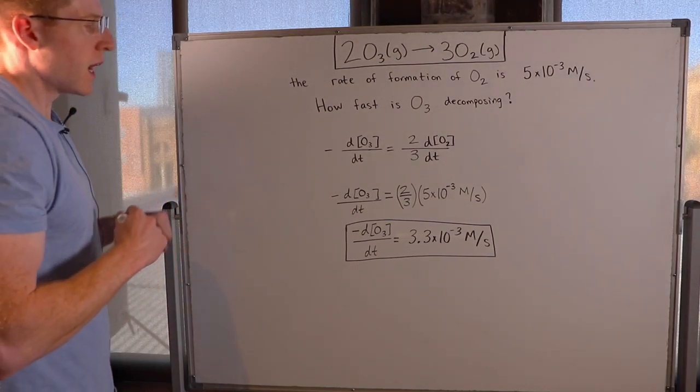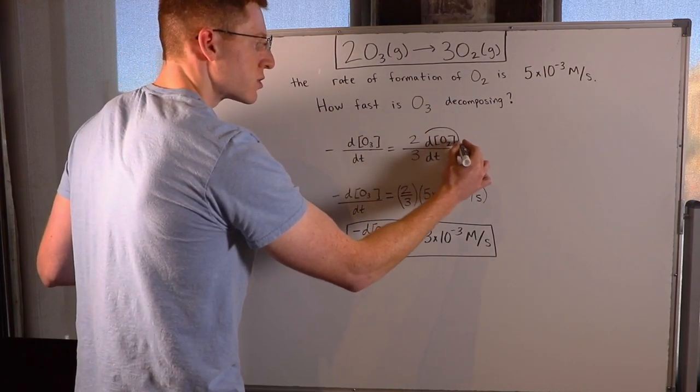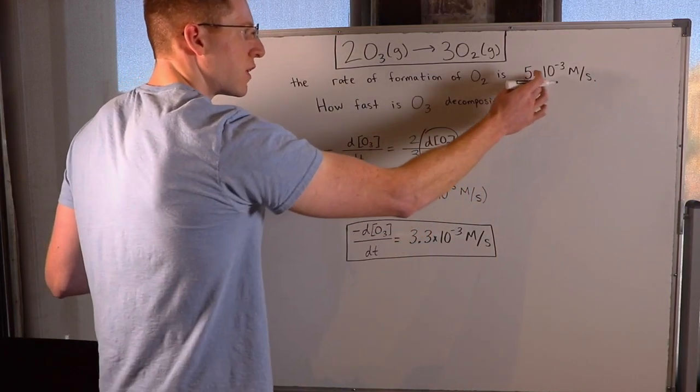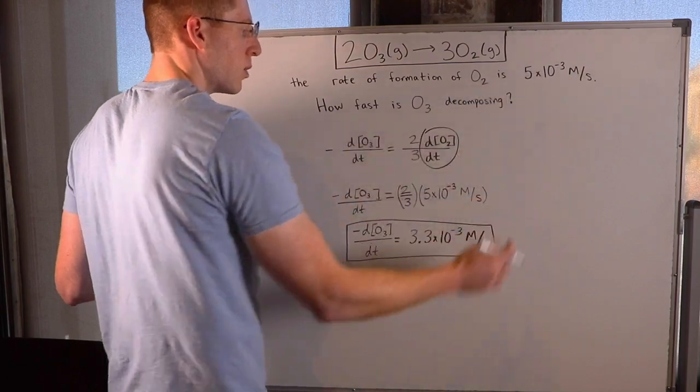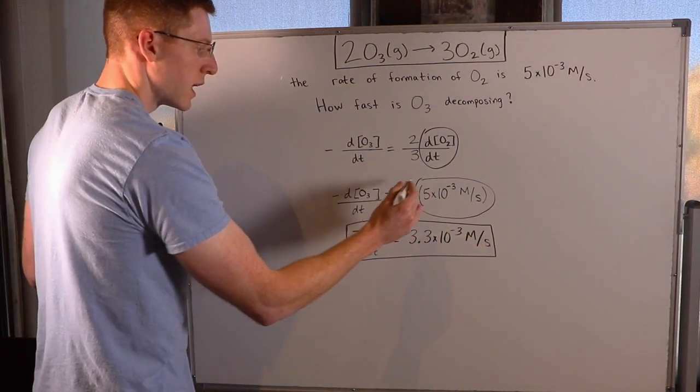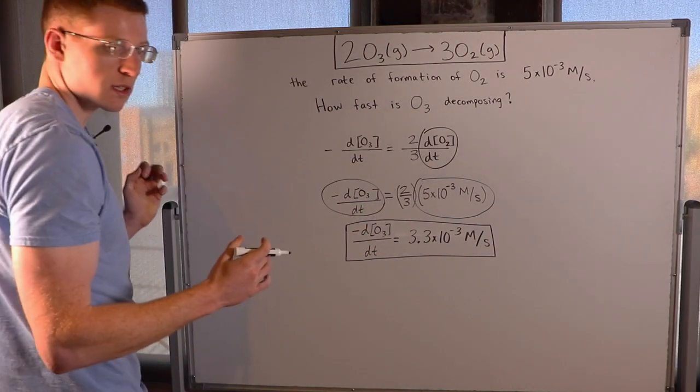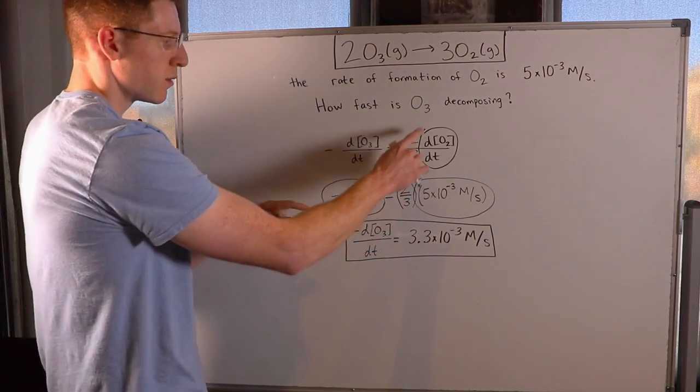So in order to solve for this, I have to understand that the rate of formation of O2 is this right here, and that was 5 times 10 to the negative 3 molar per second. So I simply plug that in, and I know that this here represents how fast O3 is decomposing—it's the rate of disappearance of O3.